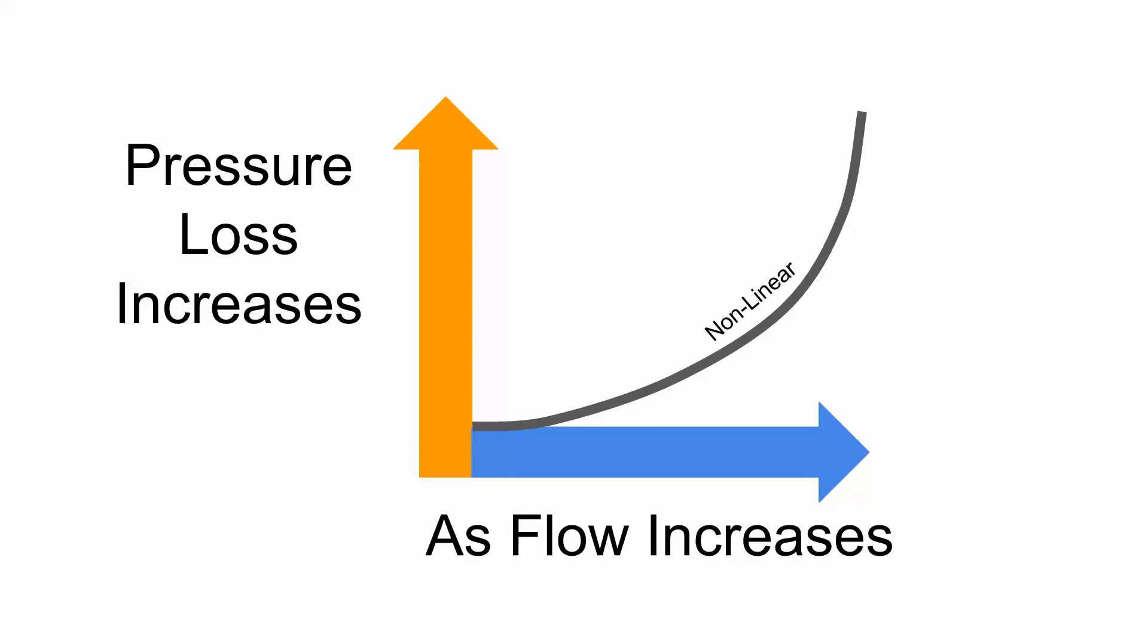In this graphic we can see that as flow rate increases, the pressure loss increases with it as well. The relationship is not linear. The graph starts out relatively shallow, and as the flow rate increases, pressure loss increases dramatically until it causes a tremendous amount of friction loss.